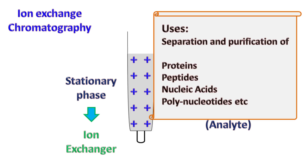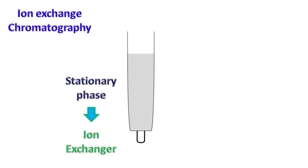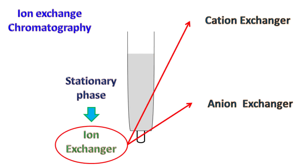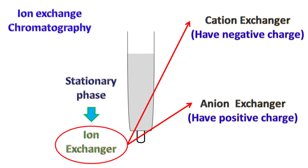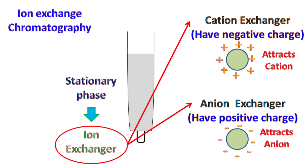Ion exchange chromatography is widely used for the separation and purification of proteins, peptides, nucleic acids, polynucleotides, etc. The ion exchanger can be of two types: cation exchanger and anion exchanger. The cation exchanger has a negative charge and attracts positively charged cations, while the anion exchanger is positively charged and attracts negatively charged anions.